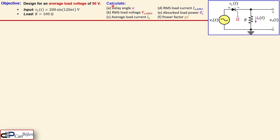In addition, we want to calculate the required delay angle, also called alpha, which is also referred to in the literature as the firing angle. We also want to calculate the RMS load voltage, the average load voltage, the average load current, the RMS load current, the absorbed load power, and finally the power factor for this design.